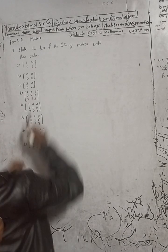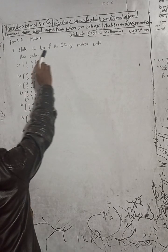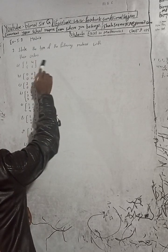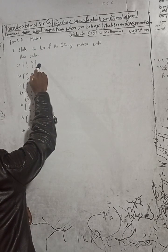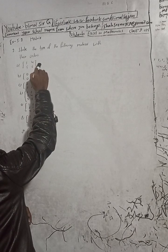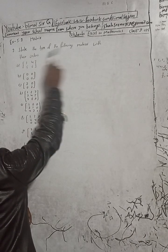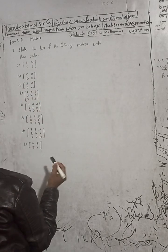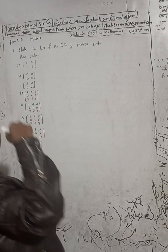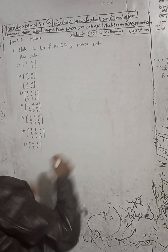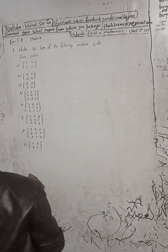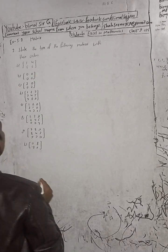The question is: state the type of the following matrices with their orders. We will identify the name and the order of each matrix.